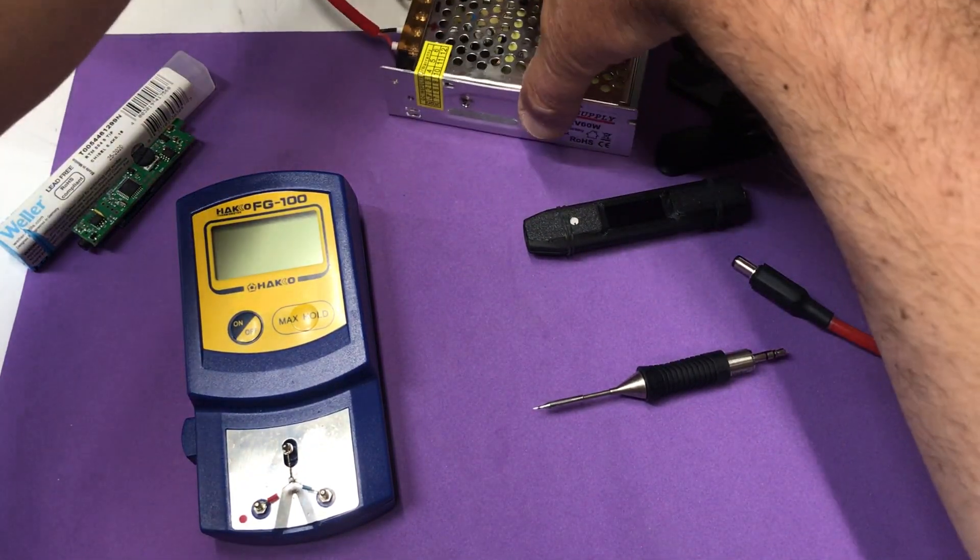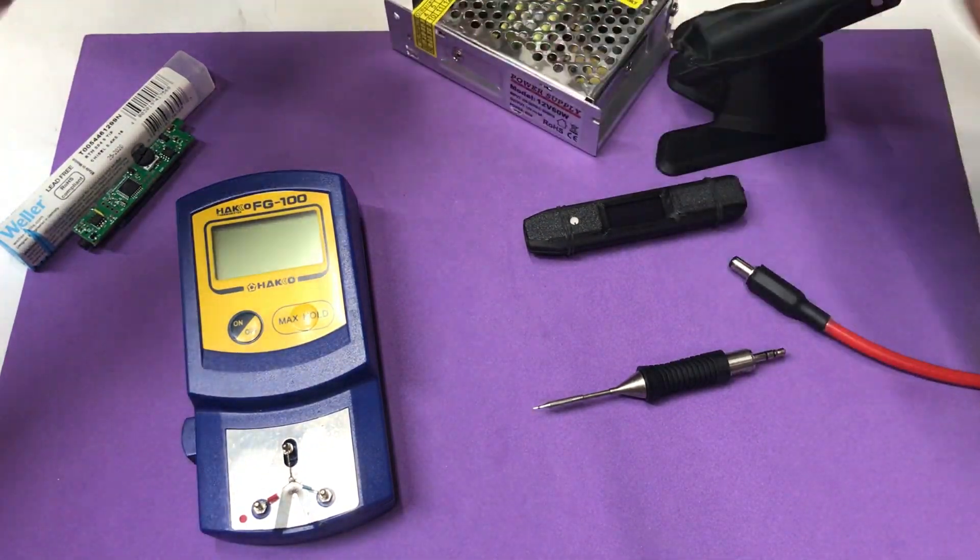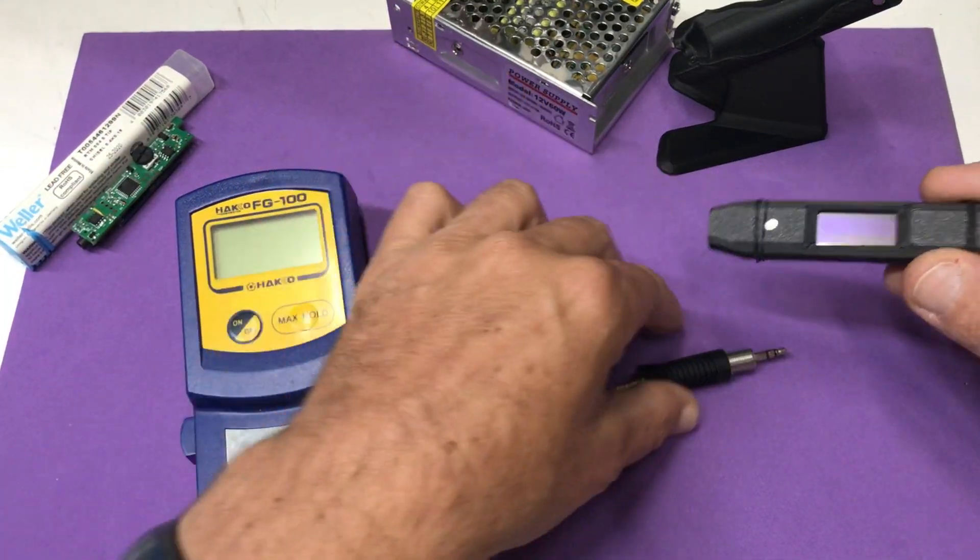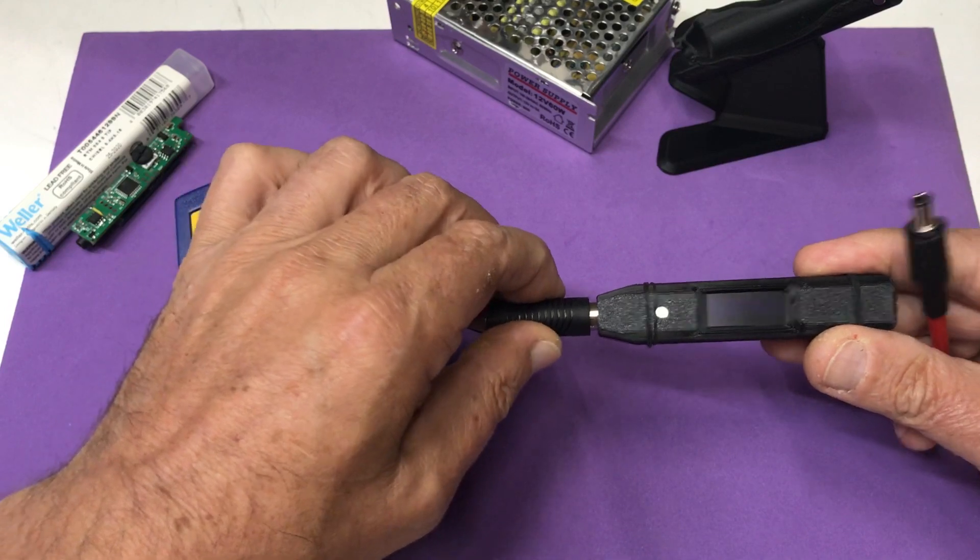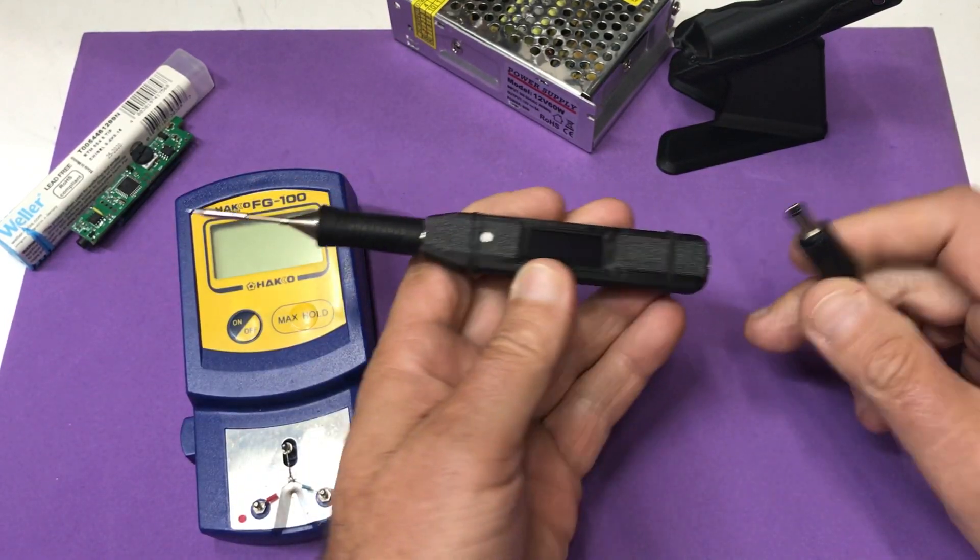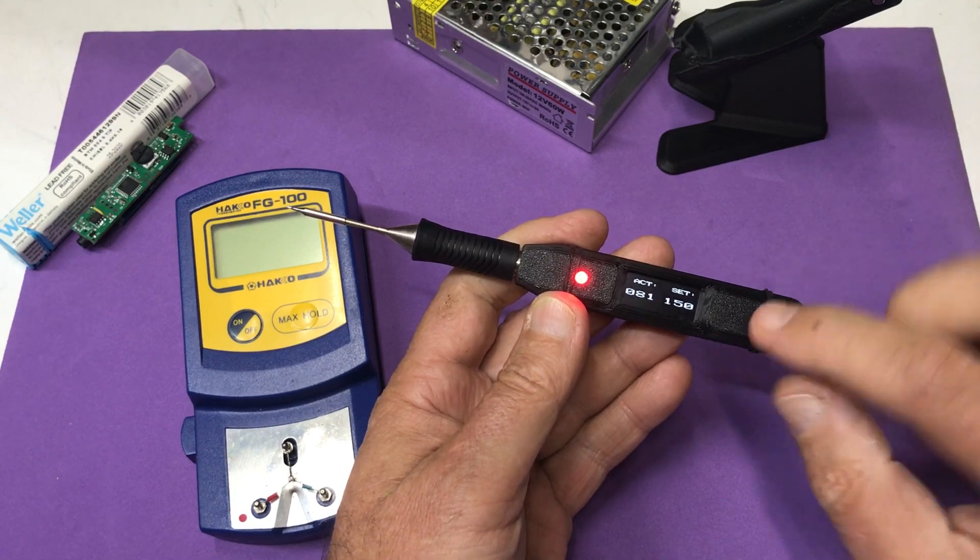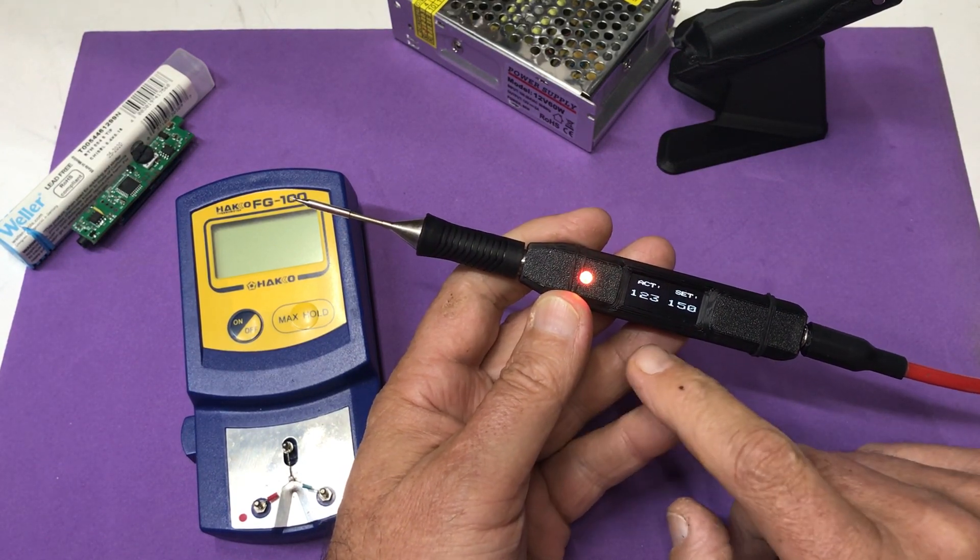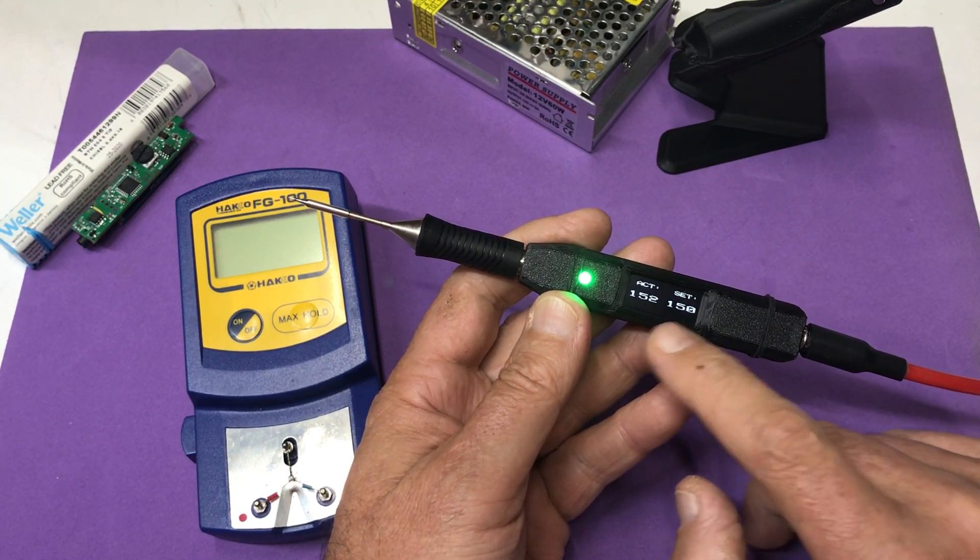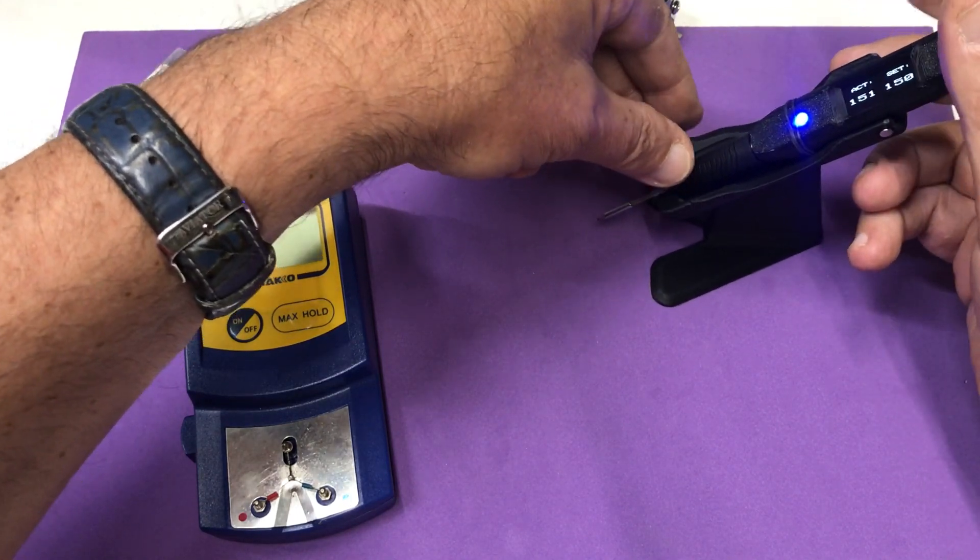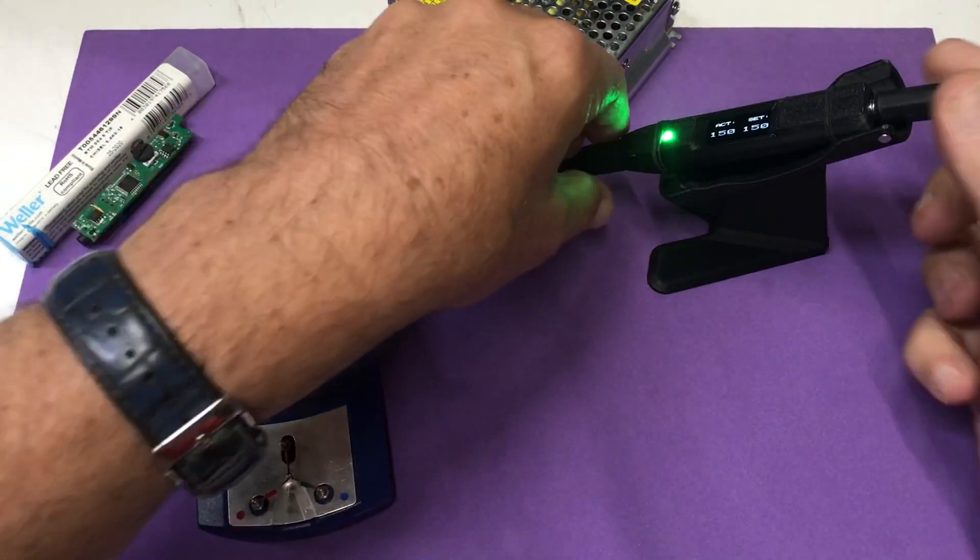Let's get this thing on, turn on the power, reconnect the tip, see the temperature. Set to 150 degrees. Now we can put it in a stand and place it into the stand.